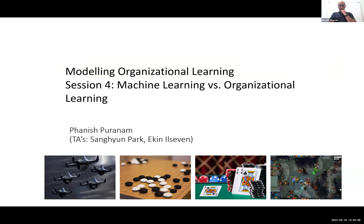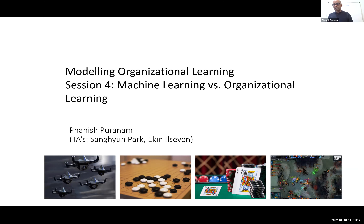On the left you have autonomous vehicles — unmanned autonomous vehicles, drones if you like. Then you have a picture of Go, the famous Asian game of strategy. You have a game of poker and then multiplayer online video gaming. Each of these has been a test case where multi-agent reinforcement learning has been extremely effective. In examples one and four, they are really studying organizational learning in very similar ways to the way we are.